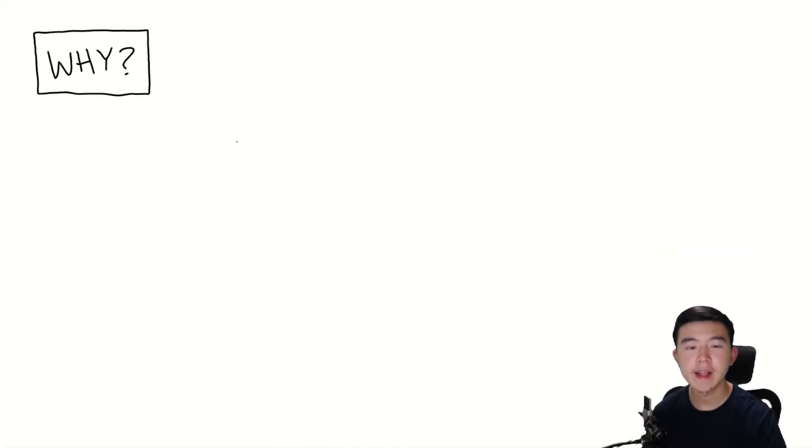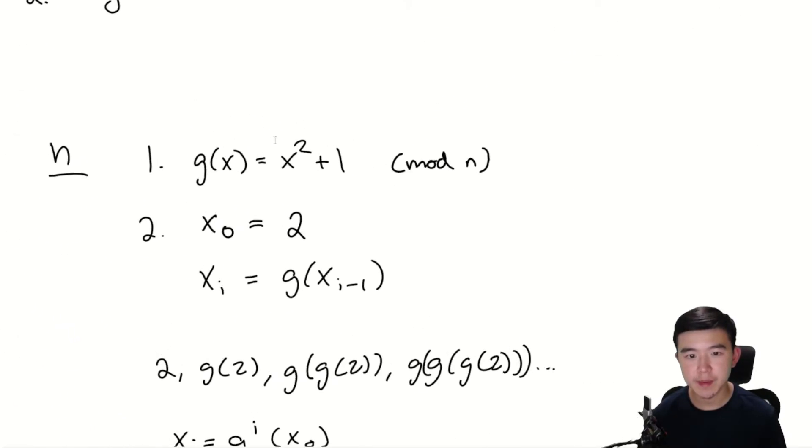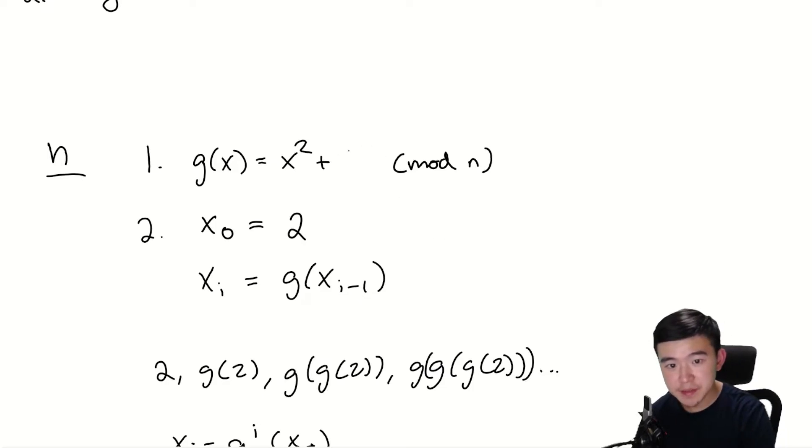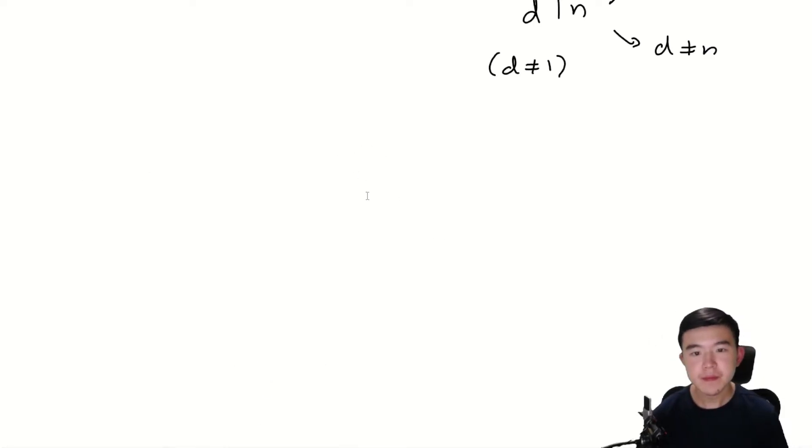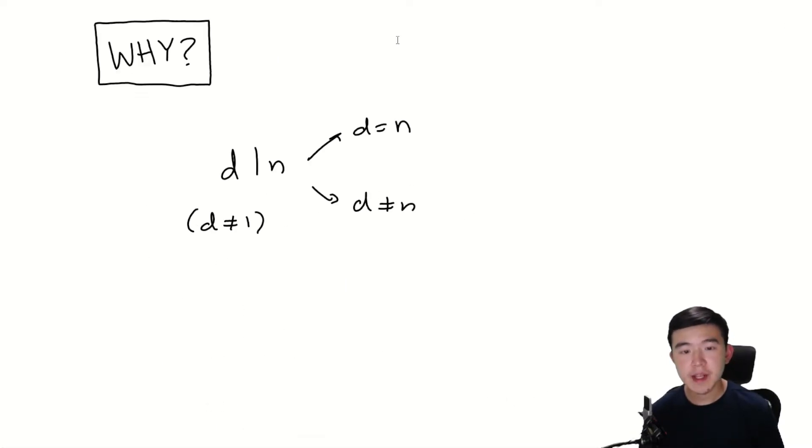And now I'll explain why the algorithm works. So at the end of the algorithm, we've obtained a number d that divides n, where d is not 1. Either d equals n, or d does not equal n. If d equals n, then we haven't really learned anything, and what we're going to do is we're going to go back to this original polynomial, g(x) = x² + 1, and instead make it like x² + 2 or something. We can also change the starting value for the sequence. So instead of having it be 2, we can make it be 3, or 5, or any number that is less than n. Once we do that, we'll just start the algorithm, cross our fingers, and hope we get a value of d that is actually helpful.